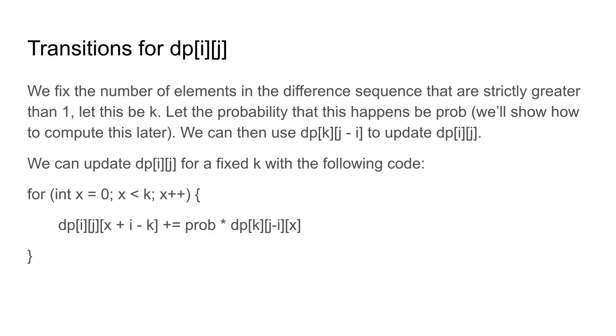Next, we'll talk about the transitions. In this case, it's easier to break down by how many elements in the difference sequence are strictly greater than 1. So let's say this number is k. This is because once we fix which elements are equal to 1, we can ignore them and break down to a smaller subproblem and use that answer to help update our original problem.